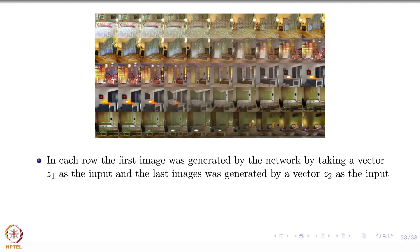There are 5 rows and 10 columns. Now, look at one row at a time. In each row, the first image was generated by sampling some Z1. You took some Z1, fed it to the trained generator and it generated this image. The last image was generated by some other Z2. You pass Z1 to the generator and the first image you see is the one generated by Z1.